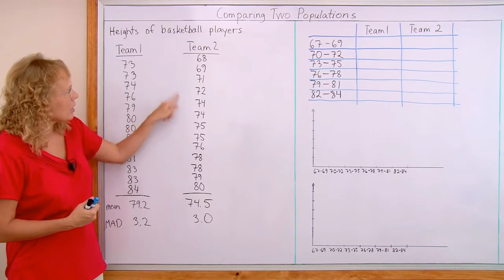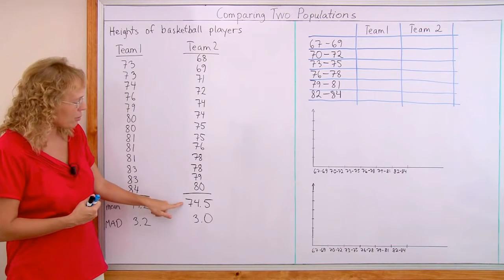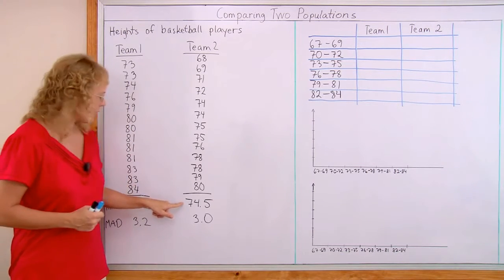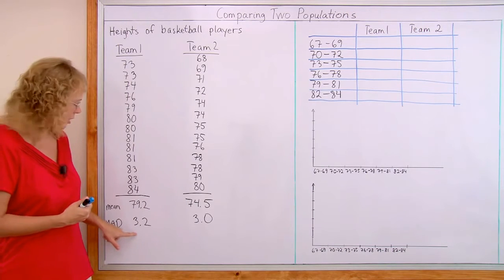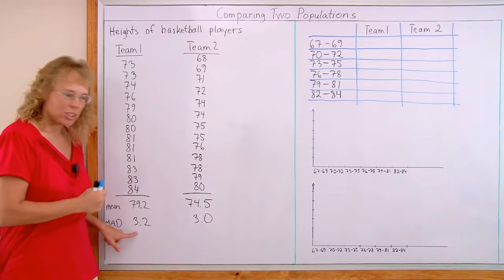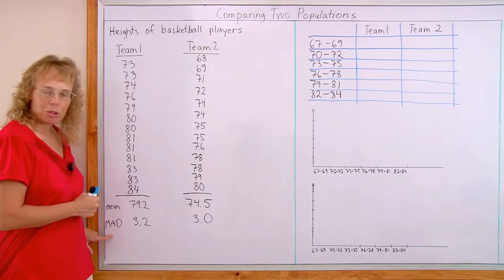So, on average, these heights differ from this number by three inches. Okay? And here similarly, because this is very similar, about three inches as far as the mean absolute deviation.